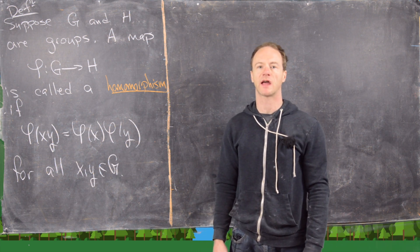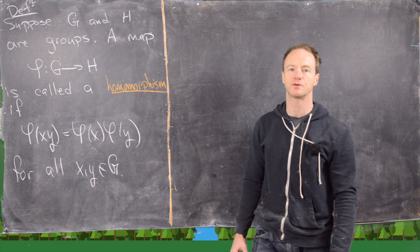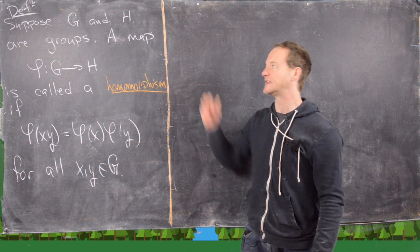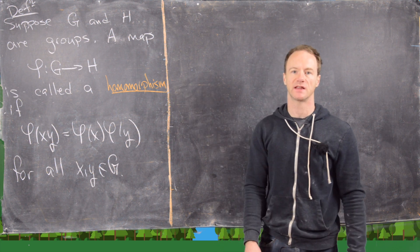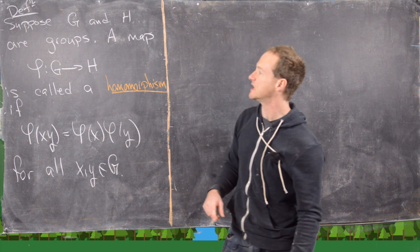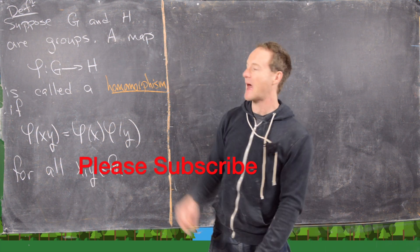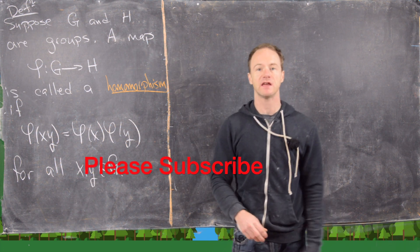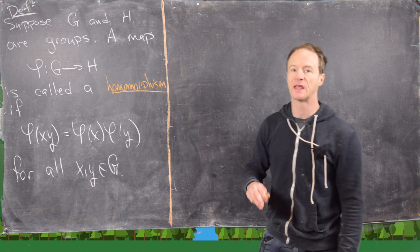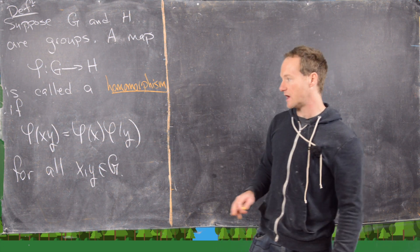In this video we're going to look at a special type of function between two groups called a homomorphism. The definition goes like this: we start with two groups G and H and we say that a map phi from G to H is called a homomorphism if it preserves the group law.